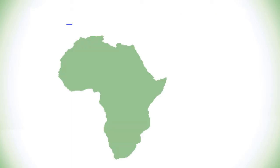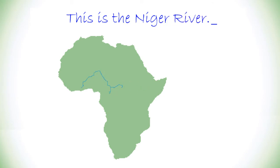This is the Niger River. The Niger River runs away from the sea into the Sahara Desert, and then takes a sharp right turn near the ancient city of Timbuktu.